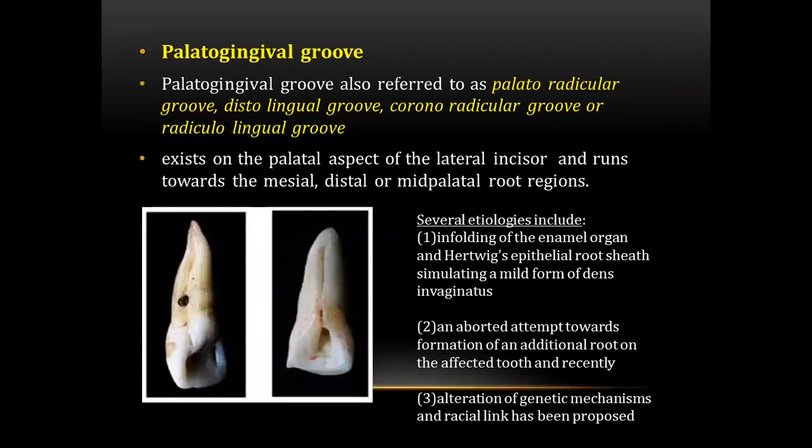The next question was about the palatal gingival group. The palatal gingival group is also referred to as the palatal radicular group, distolingual group, coronoradicular group, or radicular lingual group. It exists on the palatal aspect of the lateral incisor and runs towards the mesial, distal, and mid-palatal root regions.